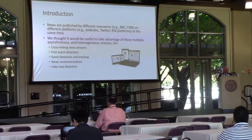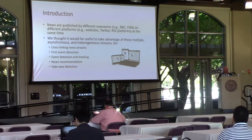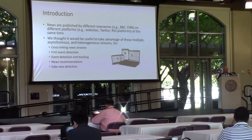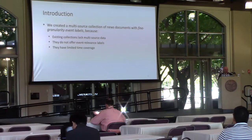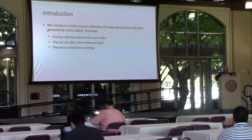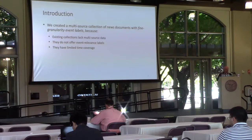This collection could be used — and in fact we used it — in the context of a project, for cross-linking news streams, for first event detection, event detection and tracking across different streams, news recommendation, fake news detection, and so on. We set out to create this multi-source collection of news documents with fine granularity event labels, to find out which particular source first discussed an event and how it was republished on other sources and streams.